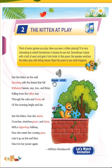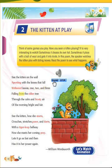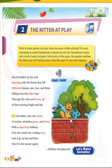First we'll listen to the lesson. 'The Kitten at Play. See the kitten on the wall, see the kitten on the wall, sporting with the leaf that falls.' You can see in the picture the kitten was on the wall and the leaves are falling — one, two, three, four — falling from the elder tree, the big tree.